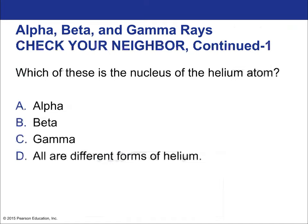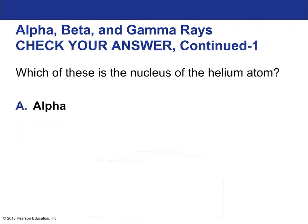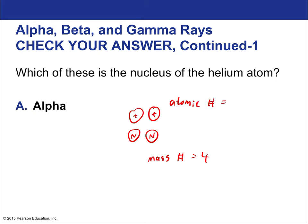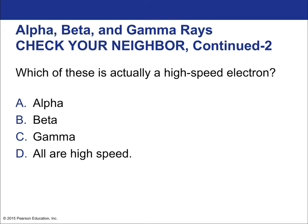Alpha particles are the nucleus of the helium atom — two protons and two neutrons. This means a mass number of four and an atomic number of two. The atomic number determines what element something is — it is the number of protons — and is the basis by which the periodic table is organized.